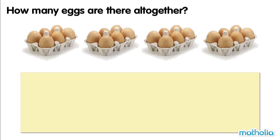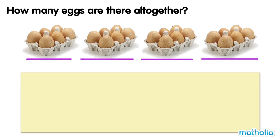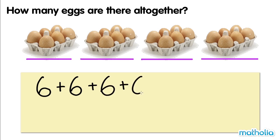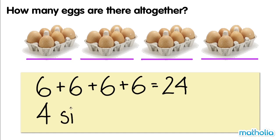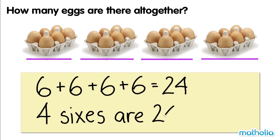How many eggs are there altogether? There are four groups of eggs. There are six eggs in each group. Six plus six plus six plus six equals 24. Four sixes are 24. There are 24 eggs altogether.